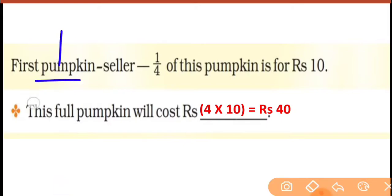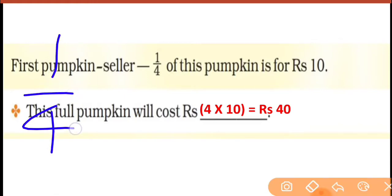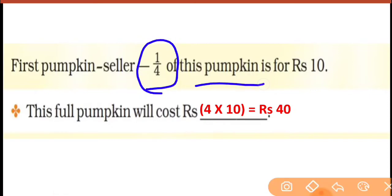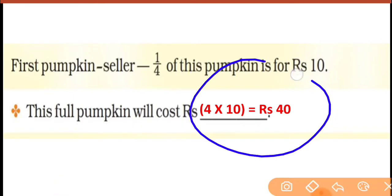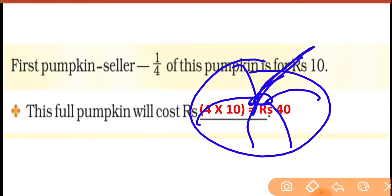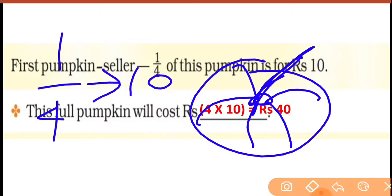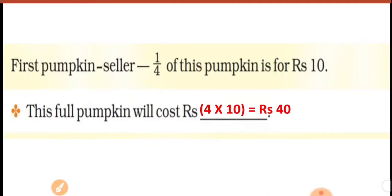Aapko dhyan rakhna hai — jahan bhi half, half ka matlab? In one whole there will be two halves. Aapko dhyan rakhna hai: in one whole, kitnay one upon four honge? Four quarters honge. Tho aapne dekha — one quarter means one upon four pumpkin ka price kitna hai? Ten rupees mein one upon four part milega pumpkin ka. Now the question is: this full pumpkin — full ka matlab poora — will cost rupees? Yeh maanlo yeh poora full pumpkin ka cost kitna padega? One upon four ka cost kitna hai? Ten rupees. Tho kitnay one upon four honge? Full pumpkin mein four one upon four honge. Tho aap simply four se multiply kar do. Four into ten.